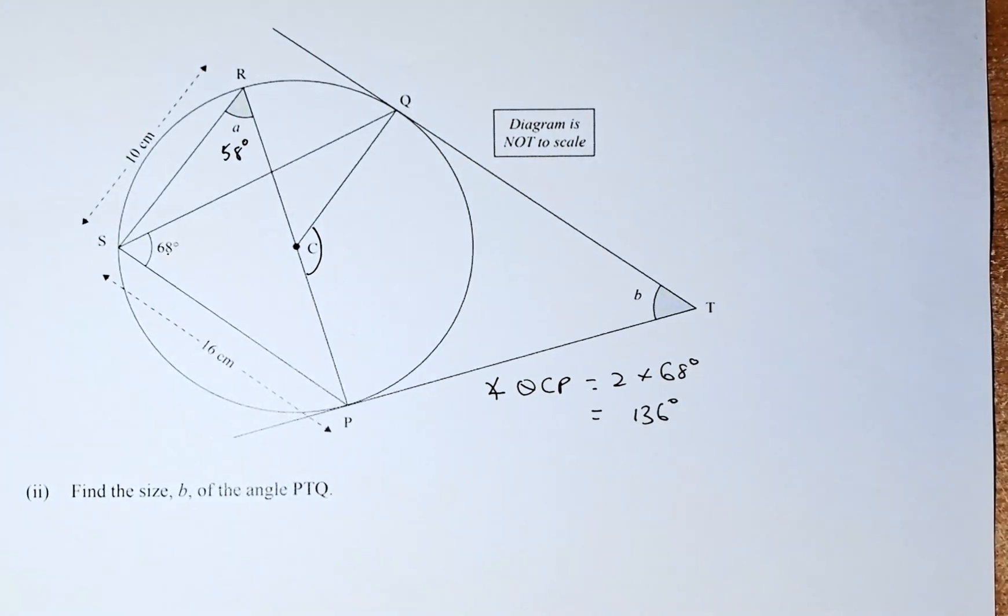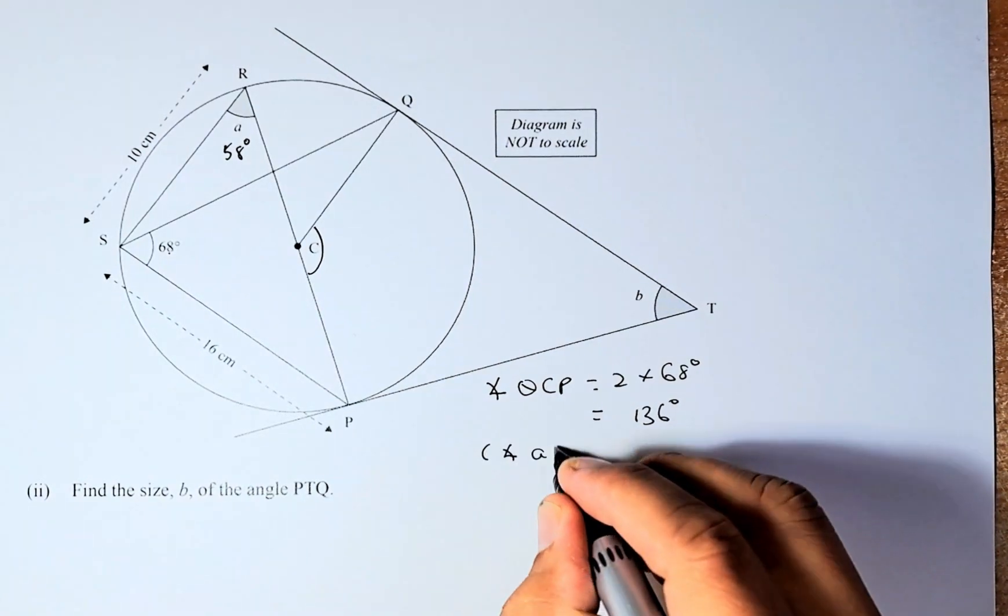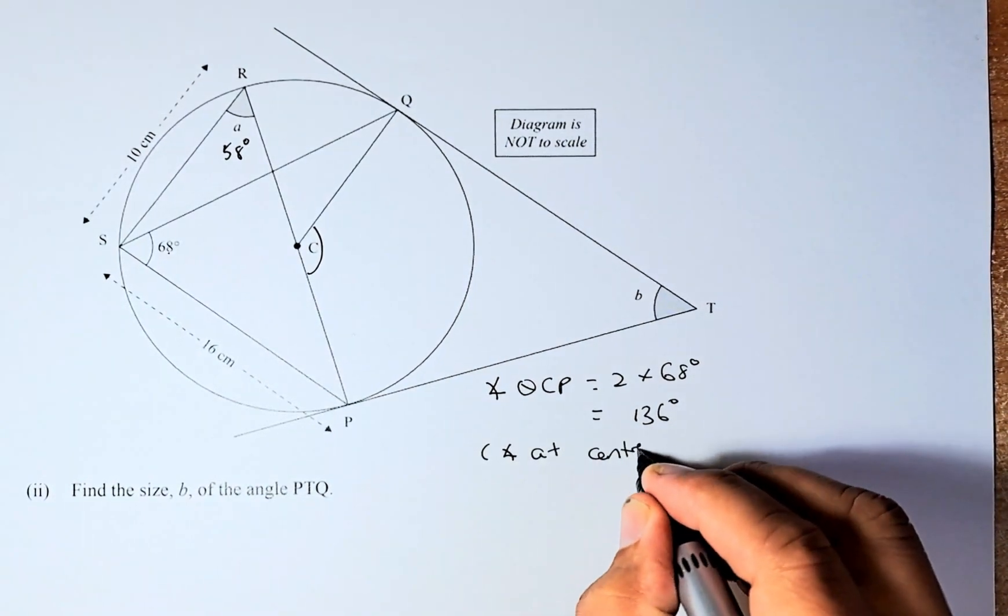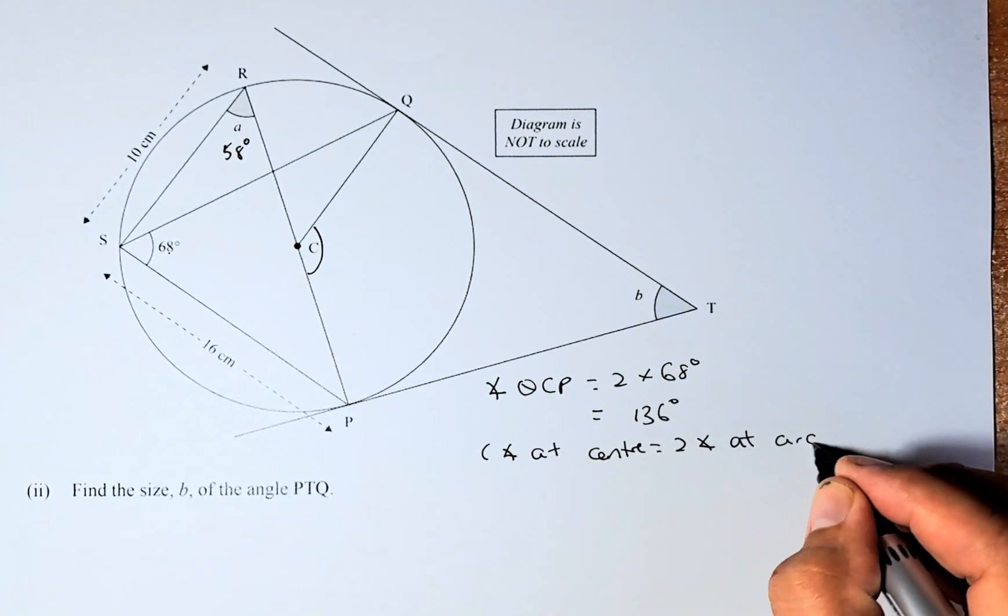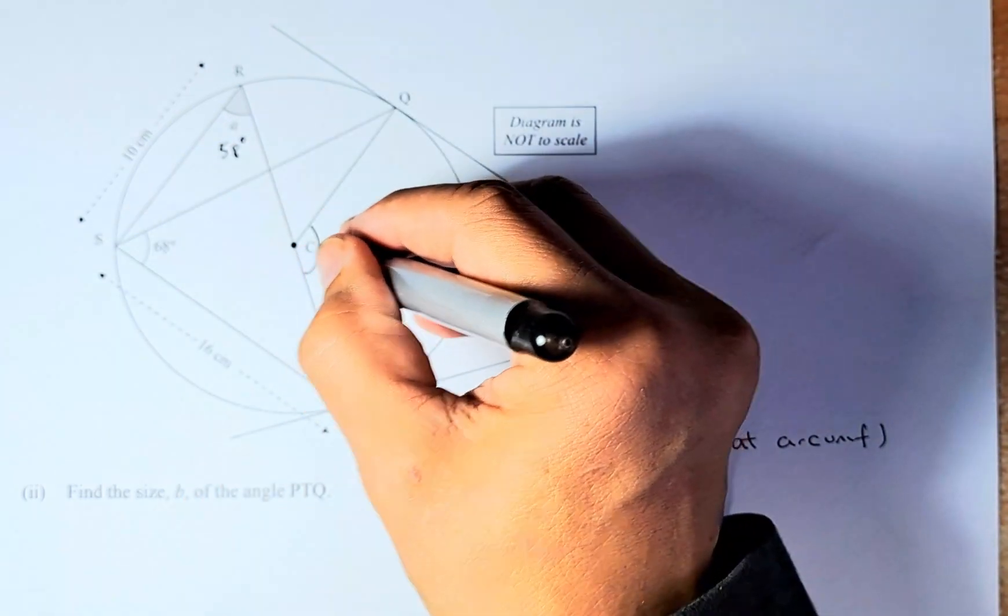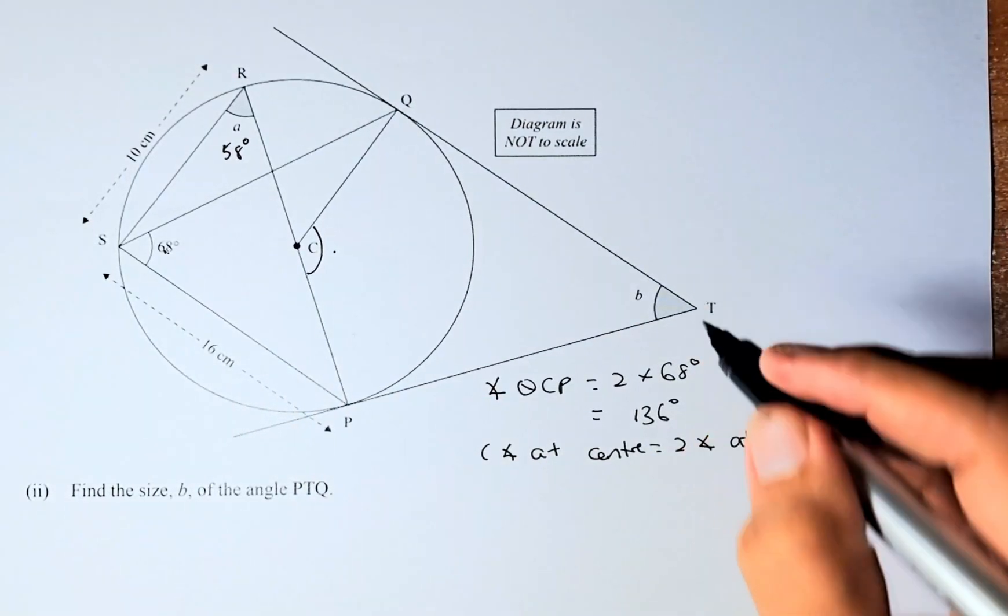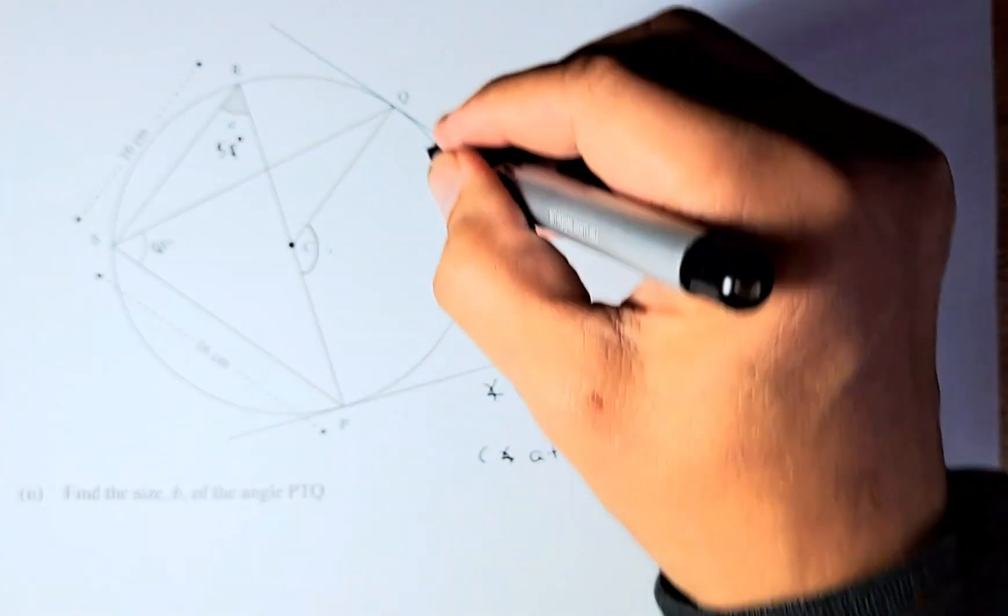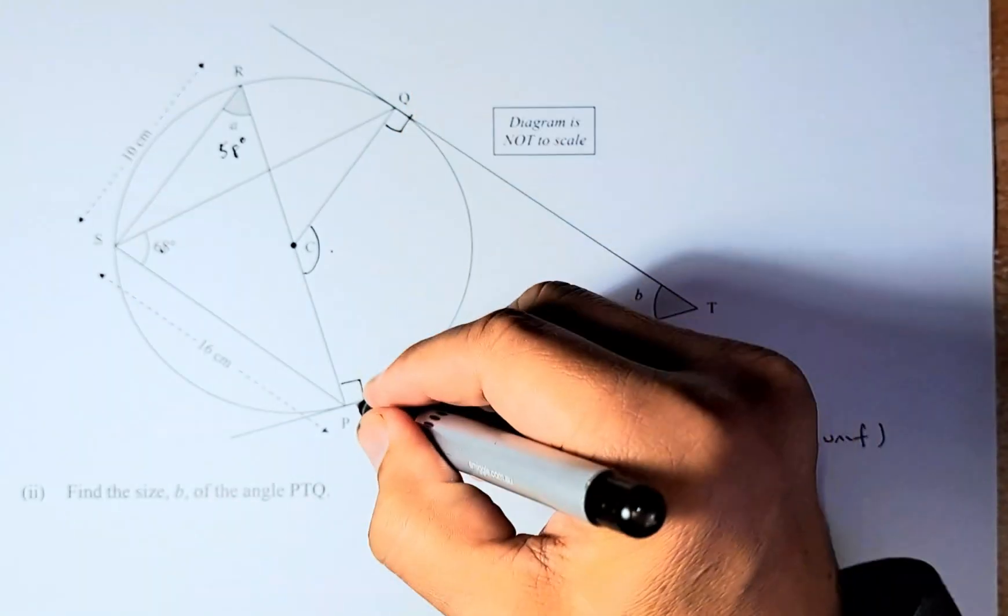Because the reason is angle at center equals to twice angle at circumference. So you can see it if you look at this quadrilateral. So this angle is double that of that angle, 136 degrees. To calculate angle B, these four angles - and these are tangent, so that must be 90. Tangent to the center is 90, so these two are 90.